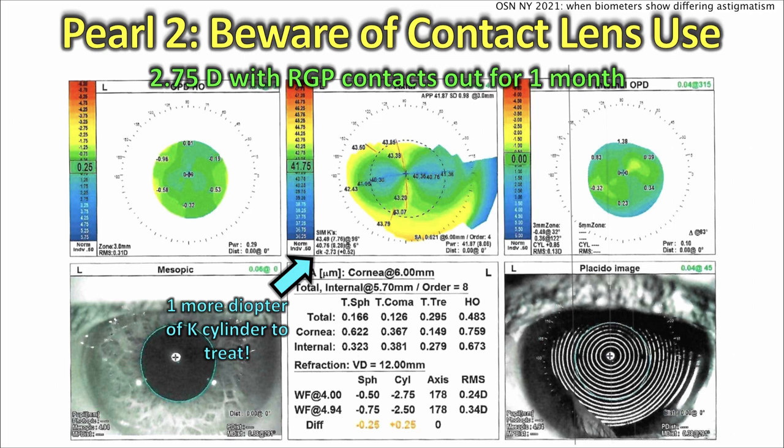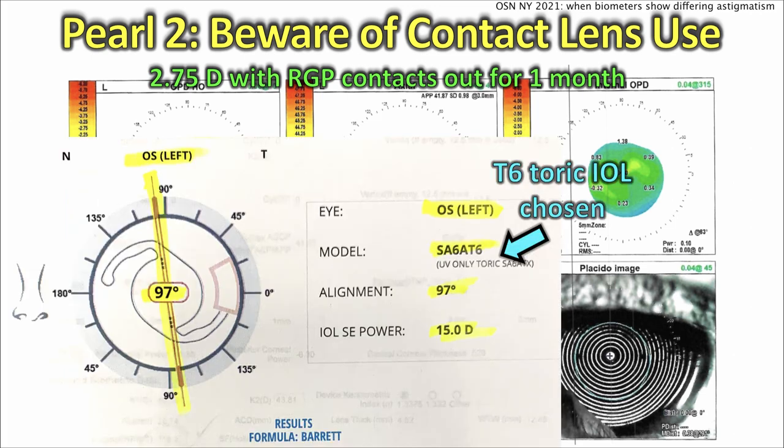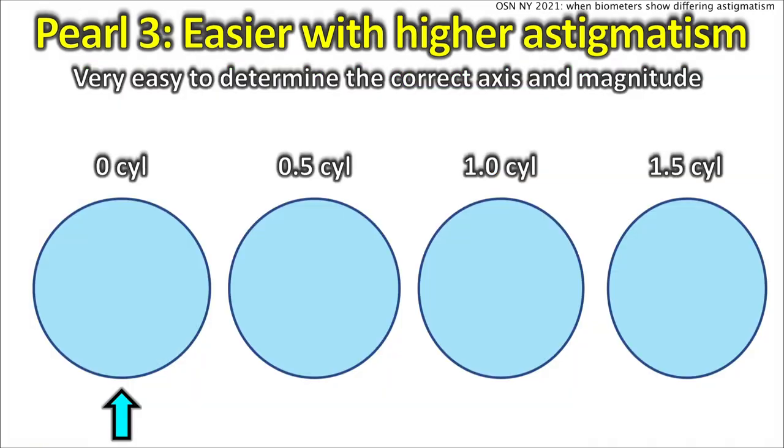Wow, what a difference — you uncovered an entire extra diopter of astigmatism to treat. That's a huge difference, a lot more astigmatism. Now we do the calculations and we're using the T6 toric lens, so that lens is going to correct about 2.5 diopters of astigmatism at the corneal plane. The post-op result of this patient was spot on — this patient was thrilled and had a perfect outcome. Thank goodness we took the contacts out.